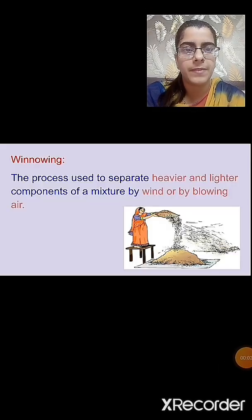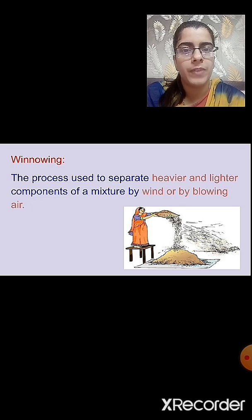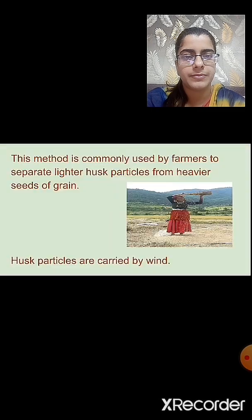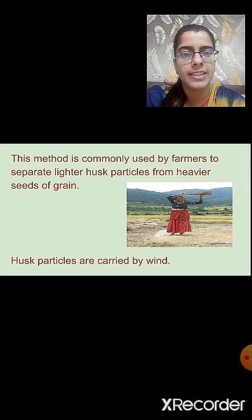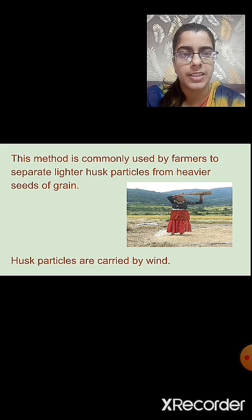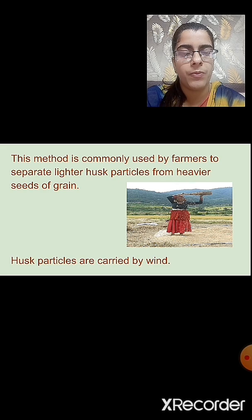The third method we studied was winnowing. Winnowing is used to separate the heavier and lighter components of a mixture by wind or blowing air. This method is commonly used by farmers to separate the lighter husk particles from the heavier seeds of the grain. They allow the husk and seeds mixture to fall from a certain height — the husk, being lighter, is carried away by the wind, while the grains fall vertically downward. This is how husk and grains can be separated from each other.